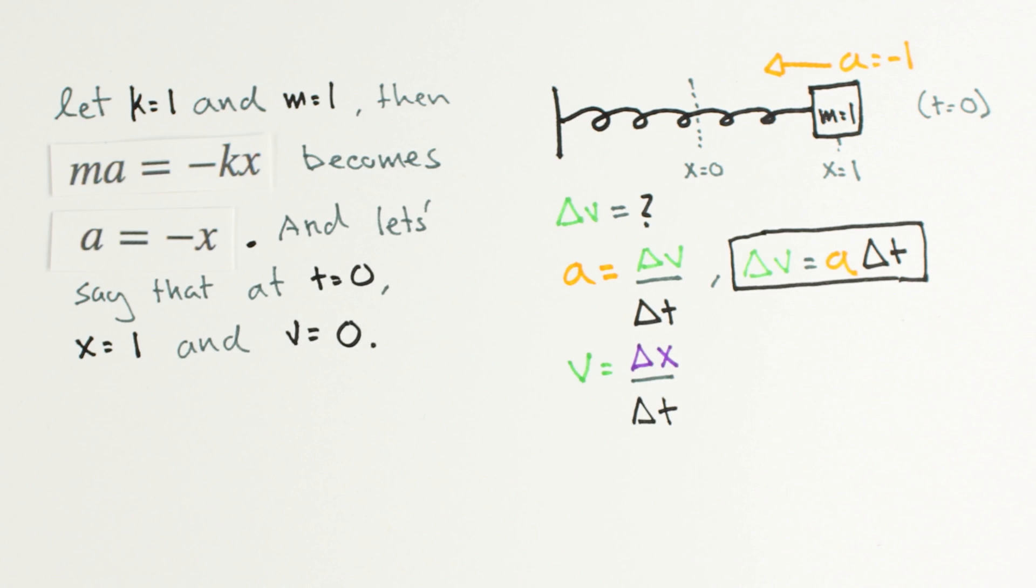we will change our velocity by delta t times a. Likewise, if our object experiences a velocity of v for delta t seconds, it will move a distance of v times delta t.